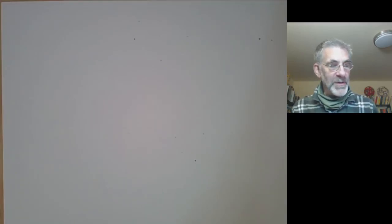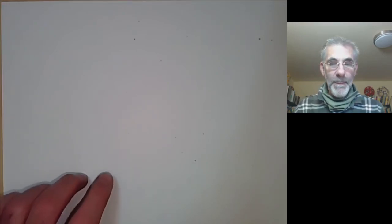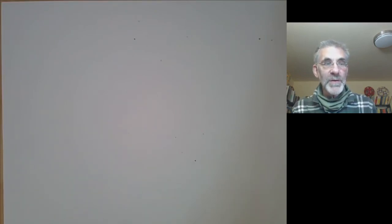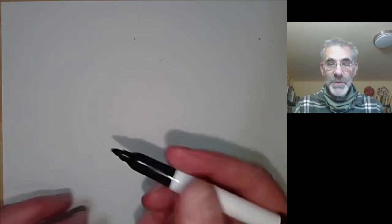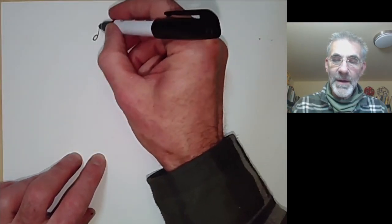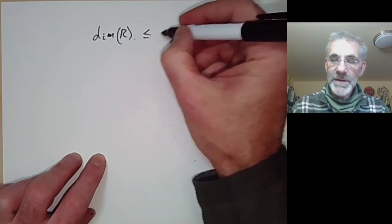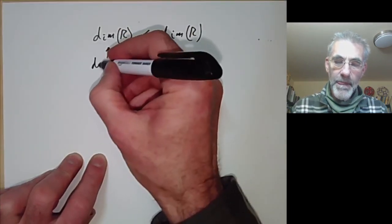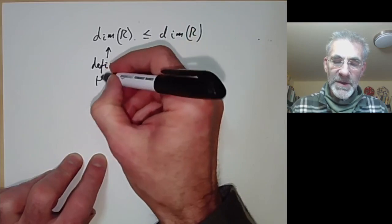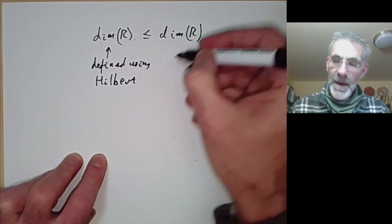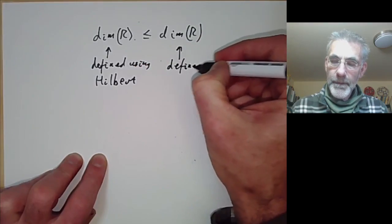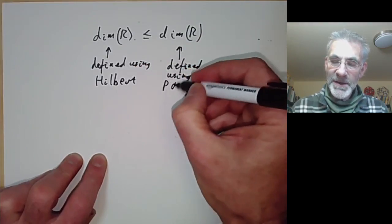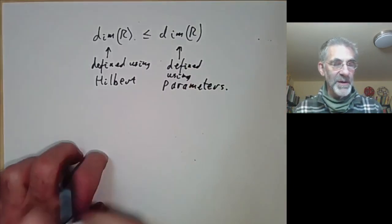This lecture is part of an online commutative algebra course and will be a somewhat technical lecture about the dimension of a local ring. In the previous lecture we had several different definitions of the dimension of a local ring, and what we want to do is to show that they're all the same. In this lecture we're going to prove an inequality between two of them.